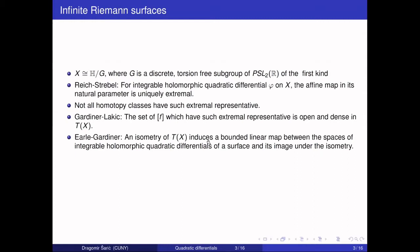Regarding isometries of the Teichmüller space of infinite surfaces, Erland Gardner proved that an isometry of the Teichmüller space of an infinite surface induces a bounded linear map between the spaces of integrable holomorphic differentials on the surface and its image. It is important to put the word 'bounded' here because the surface is not finite, so you can have unbounded linear maps.